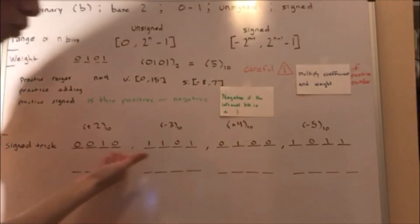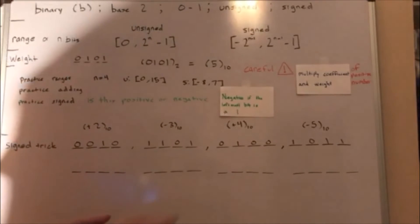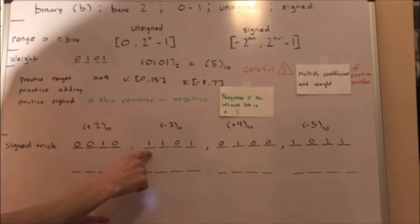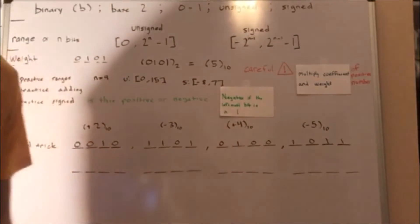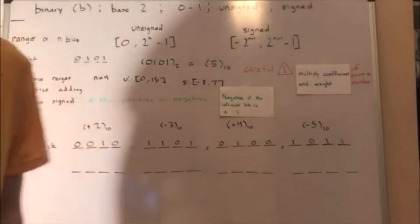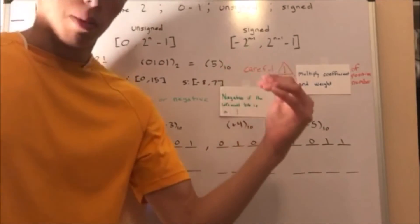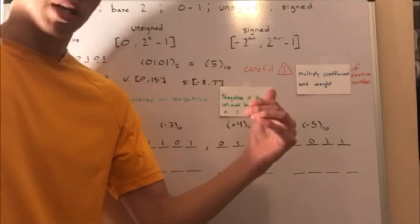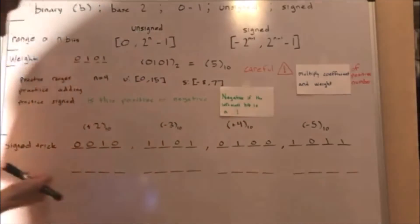Here are four different 4-bit signed binary numbers. You know it's negative if the leftmost bit is a 1. Now I'm going to show you how to go from a positive signed number to a negative signed number, and vice versa — I'll call it the signed trick.